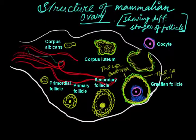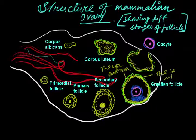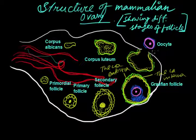The outer muscle layer is known as theca externa, whereas the inner layer is known as theca interna.